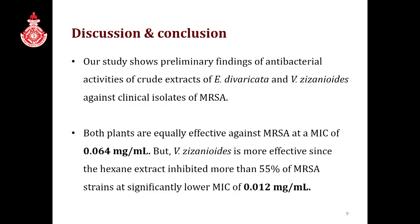This study shows preliminary findings of antibacterial activities of Hippeltis and Vetiveria against MRSA. Both plants are equally effective at a MIC of 0.064 mg/mL, but we suggest Vetiveria is more effective since its hexane extract inhibited more than 55% of MRSA strains at a significantly lower MIC of 0.012 mg/mL.